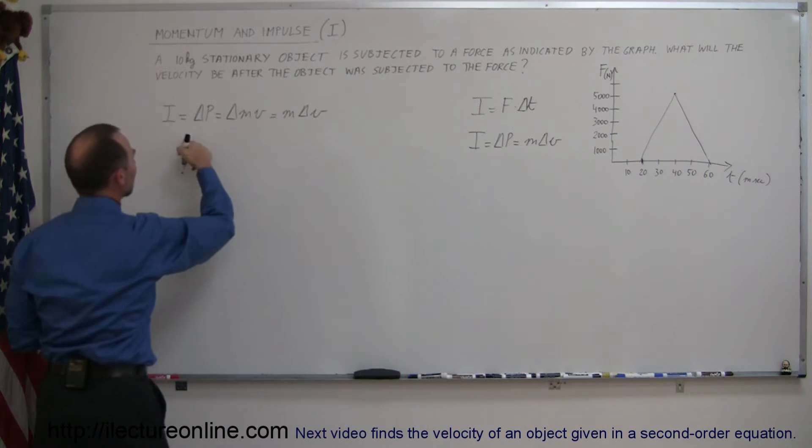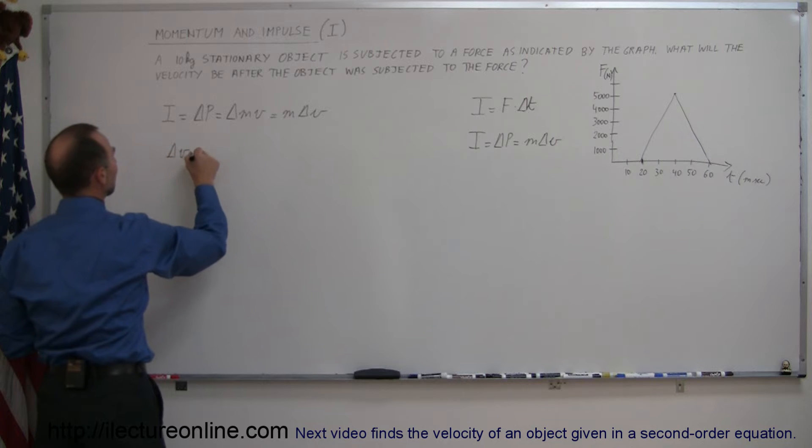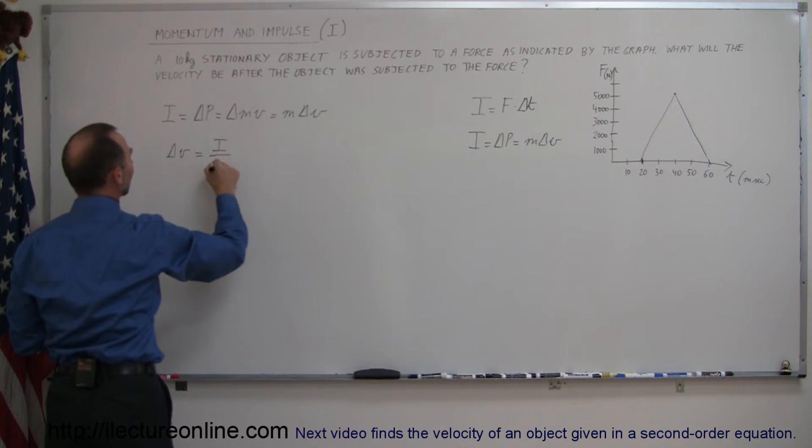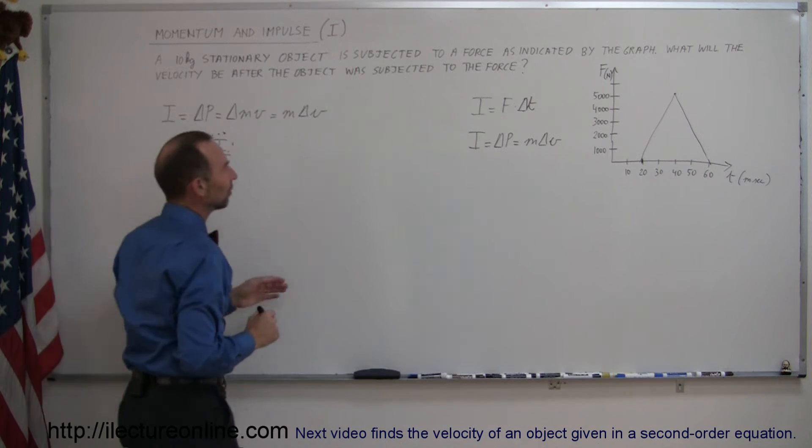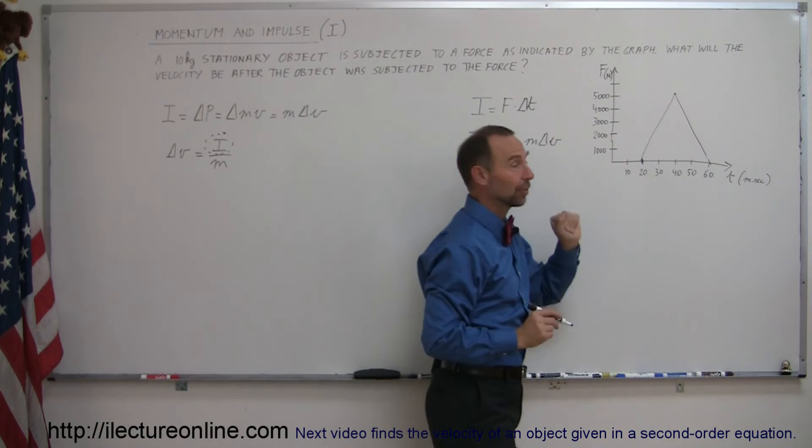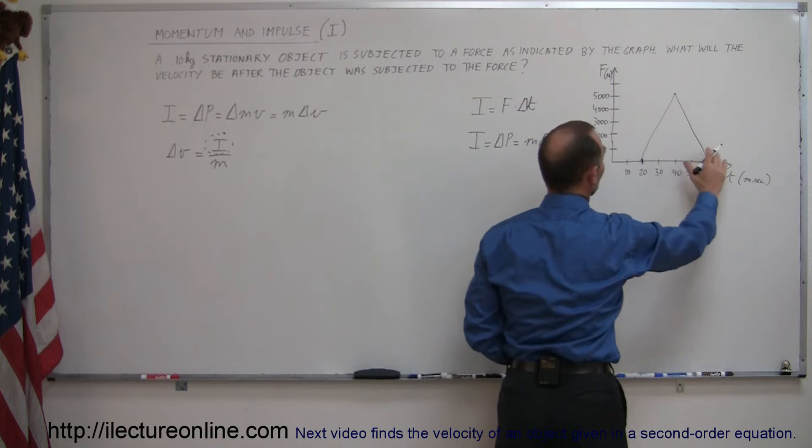So from here we can then say that the change in the velocity is equal to the impulse divided by the mass of the object. So all we have to do then is figure out what the impulse is which we can do from this graph. It's simply the area underneath this curve.